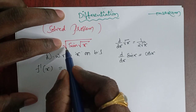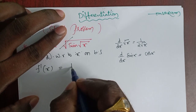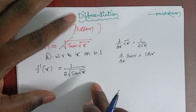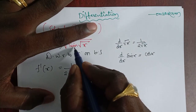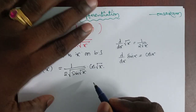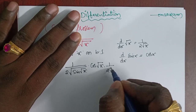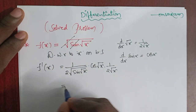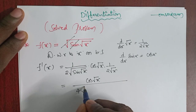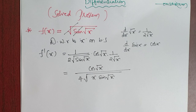Applying the chain rule: first, the derivative of the outer √ gives 1/(2√(sin(√x))), then the derivative of sin gives cos(√x), and finally the derivative of the inner √x gives 1/(2√x). So the final result is cos(√x) / (4 · √(x · sin(√x))). This is the first formula-based type.